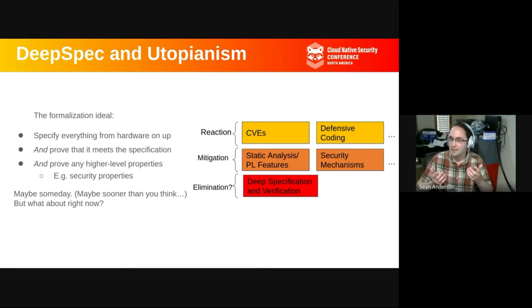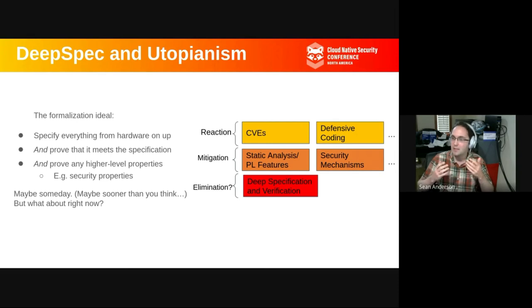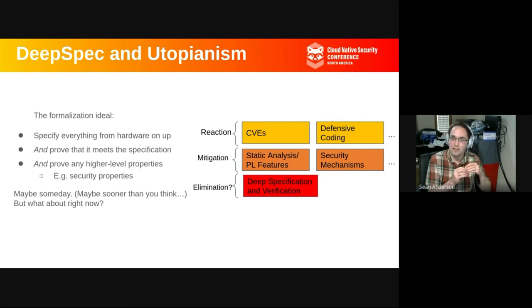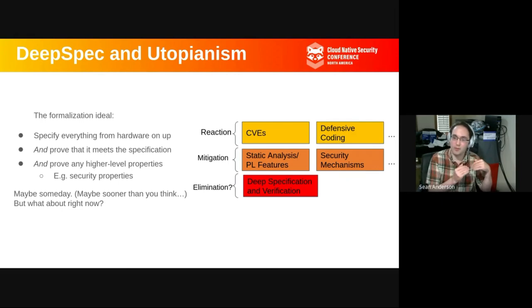What the formal methods community gets into when talking about solutions is — some people find it a bit utopian — the idea that we can actually specify at all the layers of abstraction in a system what things do and how they work. That gives the programmers working near the top the ability to specify and then verify exactly what their program is supposed to do. Because the specifications for the lower levels should also be verified, they are actually able to trust that the abstractions they're relying on are going to hold.